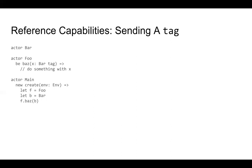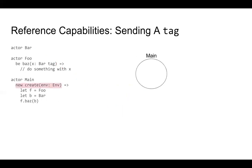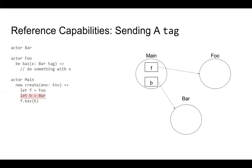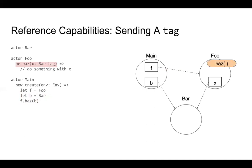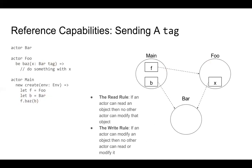Sending a tag is pretty similar — remember that an actor's default reference capability is tag. We create a main actor, create a foo actor with reference F, create a bar actor with alias B in main, then send a reference to that bar actor over to foo. Foo now has alias X. The read rule and write rule are maintained because there's no alias that can read bar and no alias that can write to bar — so our aliases are all okay.